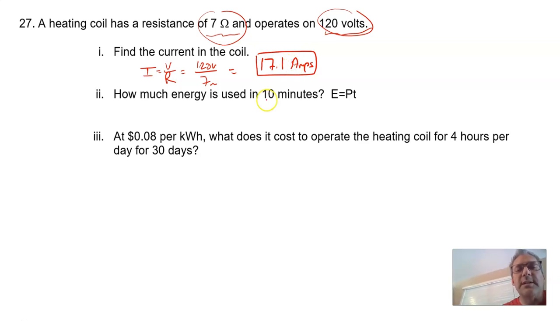How much energy is used in 10 minutes? Energy is power times time. The first thing we need to do is find the power. Power is equal to V times I. The V is 120 volts. The current, 17.1 amps. Multiply those together. That will give us watts. 120 times 17.1 is 2052. 2052 watts.